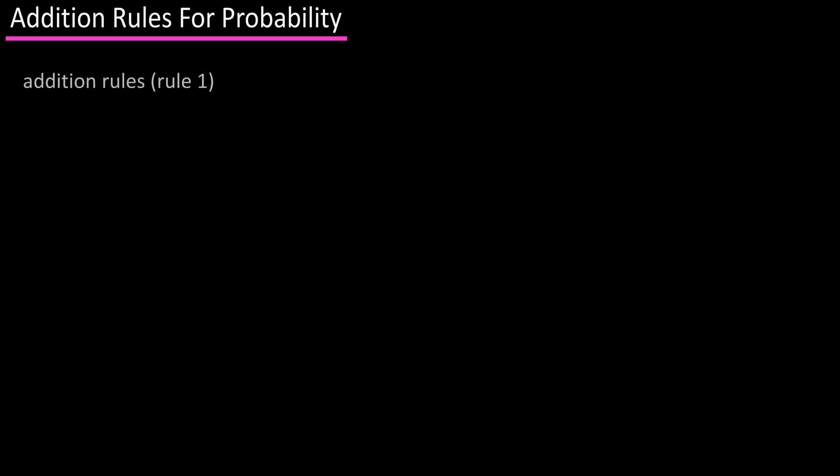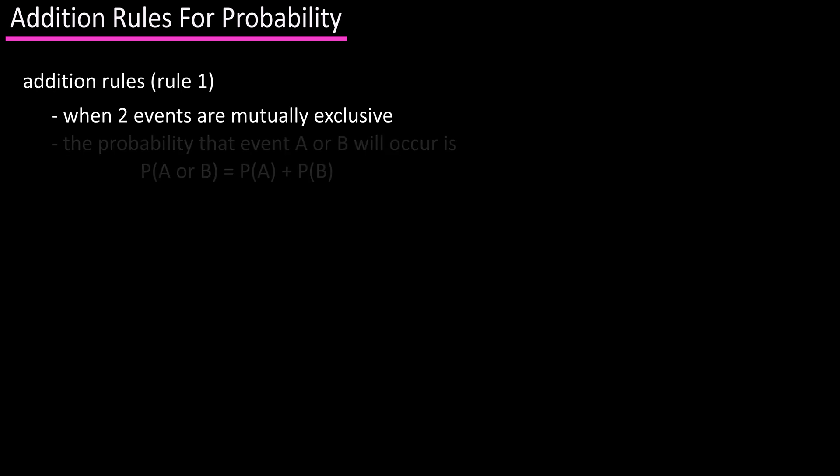Now to addition rules. The first addition rule of probability is that when two events such as A and B are mutually exclusive, the probability that event A or B will occur is P(A or B) = P(A) + P(B).